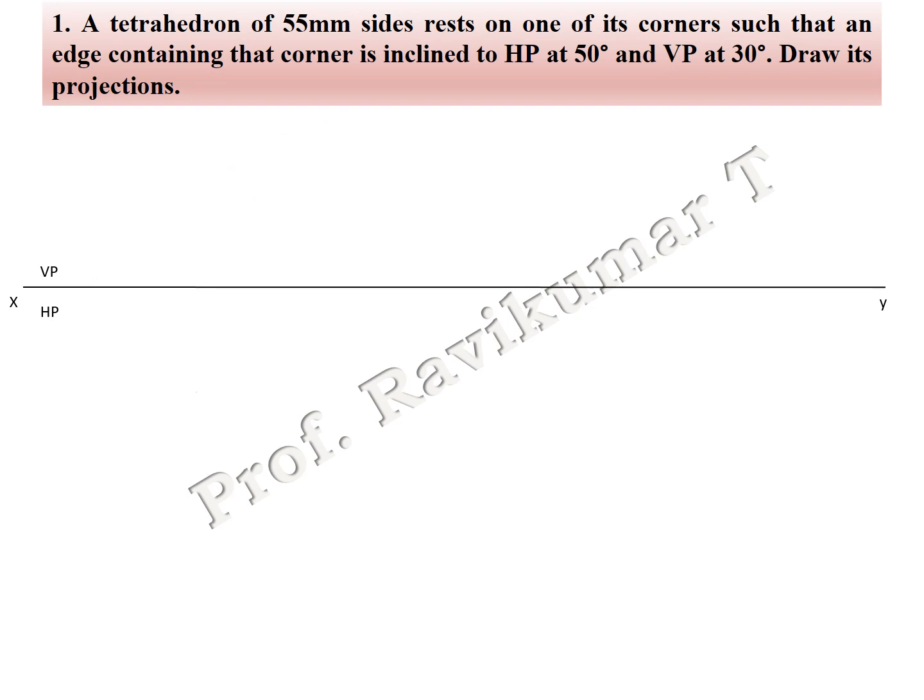A tetrahedron of 55 mm sides rests on one of its corners such that an edge containing that corner is inclined to HP at 50 degrees and to VP at 30 degrees. Draw the projection.